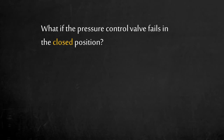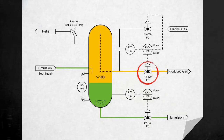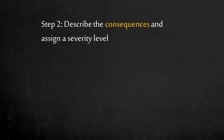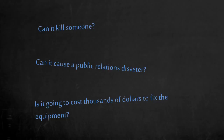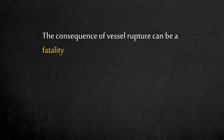Starting with the high pressure deviation from normal operation: what if the pressure control valve fails in the closed position? Step 2: Describe the worst credible consequences without safeguards and assign a severity level. What if vessel V-100 were to overpressure leading to rupture due to inadvertent closure of the pressure control valve? Can it kill someone? Can it cause a public relations disaster? Is it going to cost thousands of dollars to fix the equipment? Based on discussion, the team has agreed a vessel rupture can lead to a fatality — now one of the two elements of risk is established.